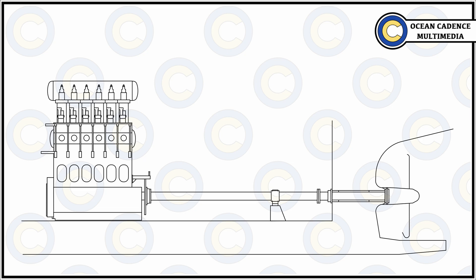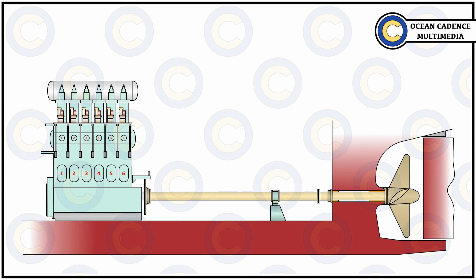A shaft power limiter is often confused with an engine power limitation system, or EPL. The basic difference between a Shapoli and an EPL is that EPL is implemented through hard wiring — a physical implementation on your engine, either through control of your governor, the movement of fuel racks, or other systems — and is physically installed to control and regulate engine operation, thus leading to regulated power output. Whereas a Shapoli is a software or electrical system installed on top of your existing engine control system to ensure the engine is never demanded a power output exceeding what is regulated by the EEXI regulation.